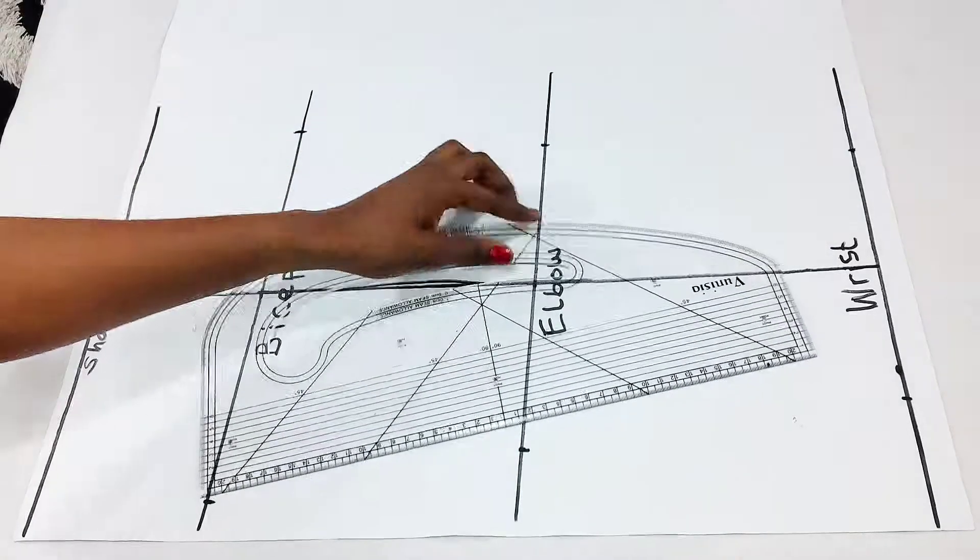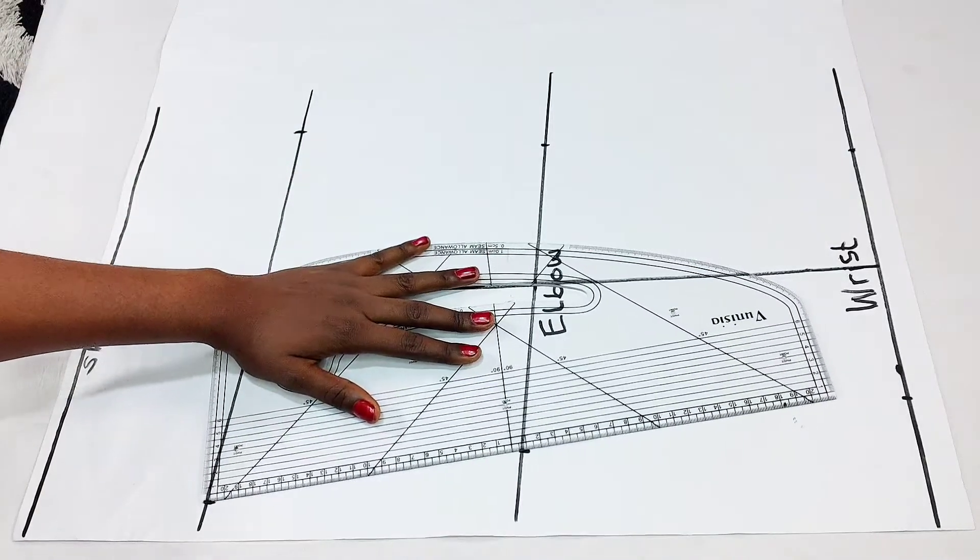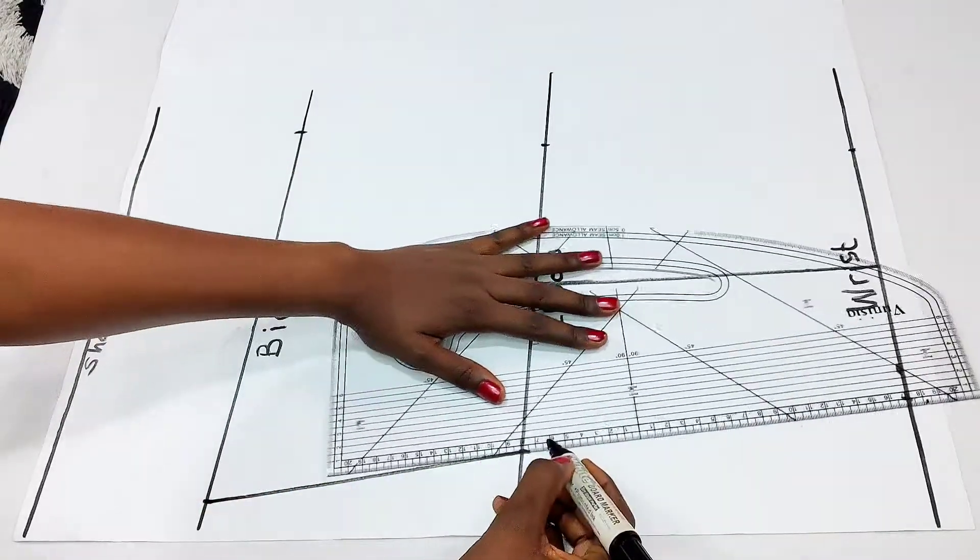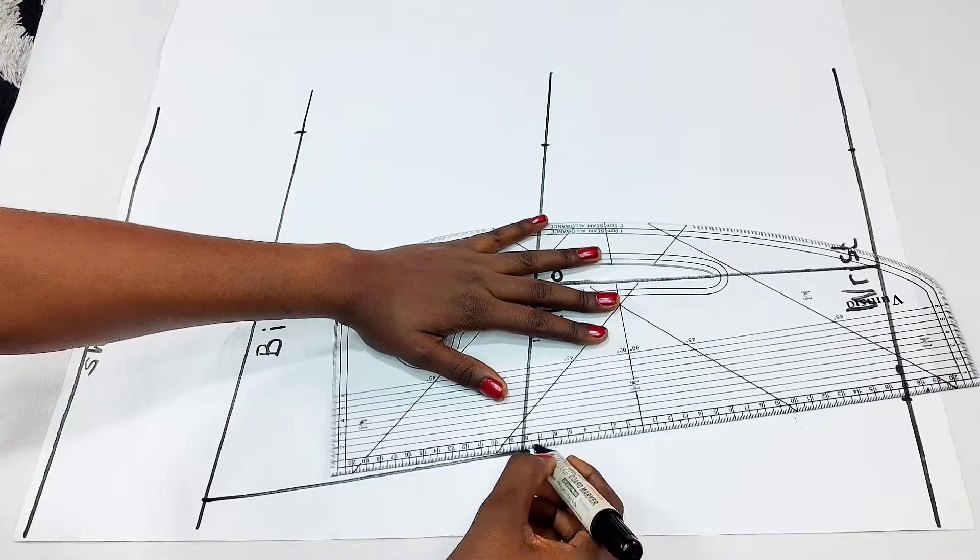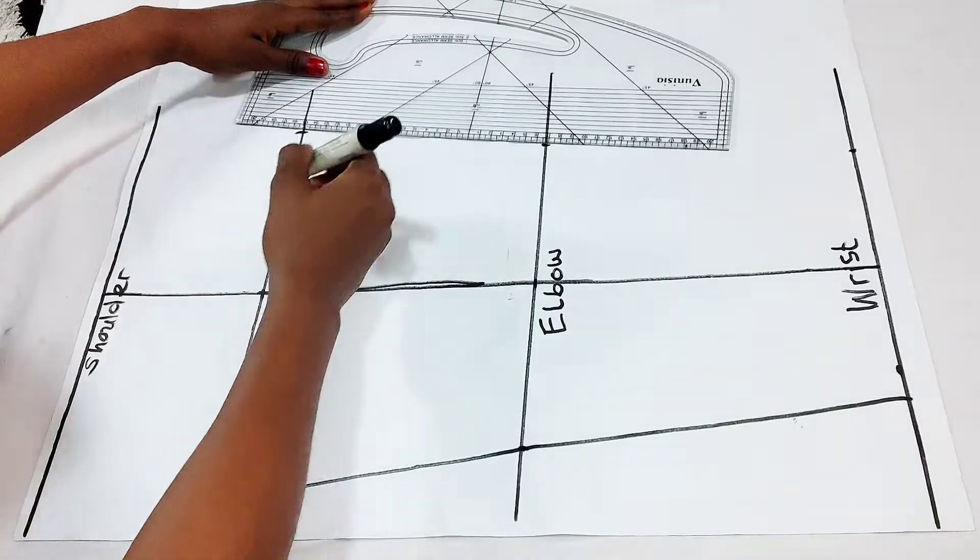I'm just going to join the three lines to get the length of my sleeve. I do that on the other side, and we move over to the curve of the sleeve.